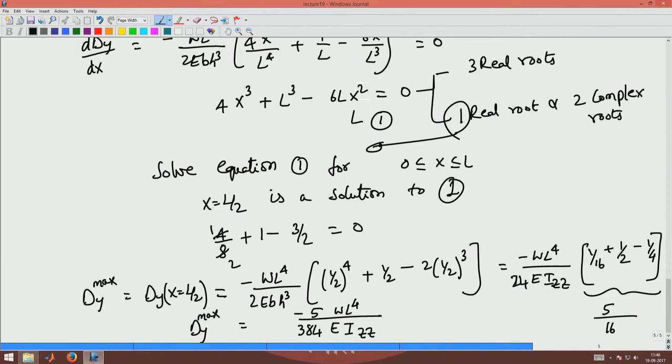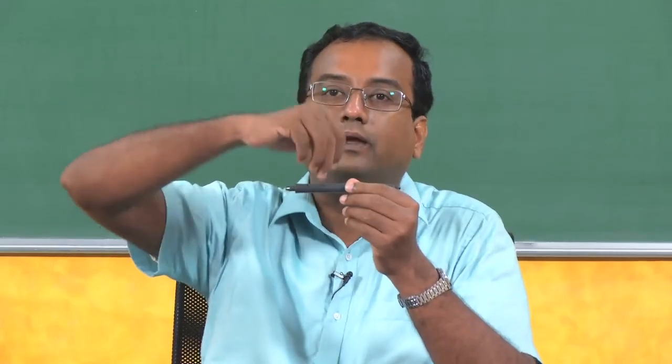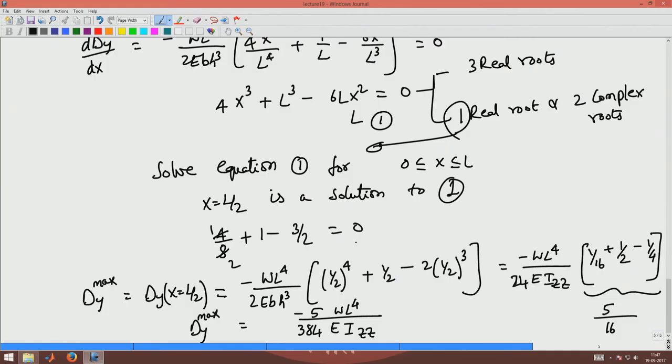Why is delta y max negative? Delta y max is negative because we assumed the positive y direction to be upward, but the beam is deflecting downward — moving in the negative y direction. That is why it is negative. The maximum deflection magnitude is 5/384 × WL⁴/(E × Izz).